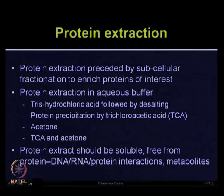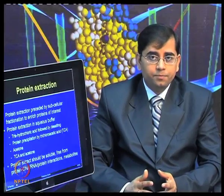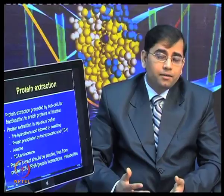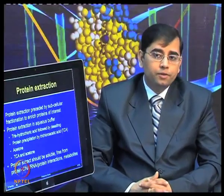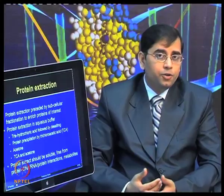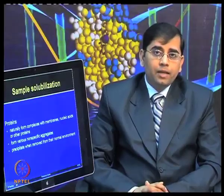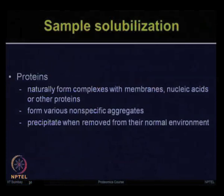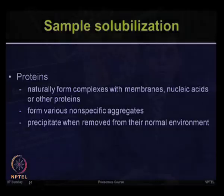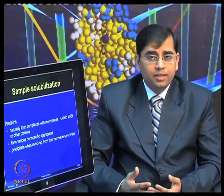I will give you more specific composition and recipes when I talk about specific examples — how to perform protein extraction for serum, bacteria, and plants. The protein extract should be soluble, free from protein-to-protein interactions, and free from protein-to-DNA or protein-to-RNA interactions. Other cellular components should be effectively removed, and no metabolites should be interfering. Sample solubilization is important because proteins naturally form complexes with membranes, nucleic acids, and other proteins.